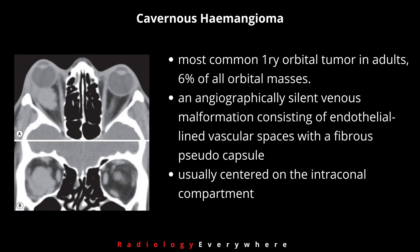Considering cavernous hemangioma: this is the most common primary orbital tumor in adults, representing 6% of all orbital masses. Cavernous hemangioma is an angiographically silent venous malformation consisting of endothelial-lined vascular spaces with a fibrous pseudocapsule. It is usually centered on the intraconal compartment and may contain phleboliths on imaging.